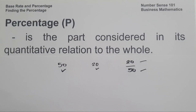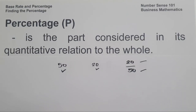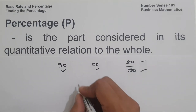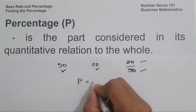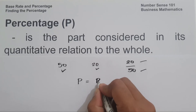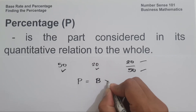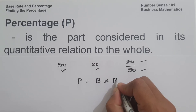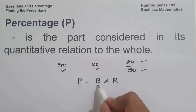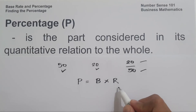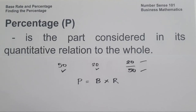To find the percentage, let us use the formula: Percentage equals Base times Rate. So P is the percentage, B is the base, and R is the rate.